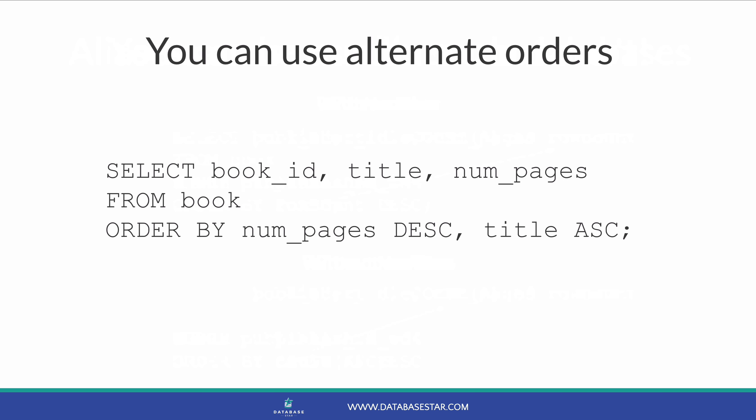If you want to order by two or more columns, you can, and you can also specify different orders for them. For example, we can order by the number of pages in descending order and then by the title in ascending order. The two columns we're ordering by are in different directions, and this is perfectly fine in SQL.